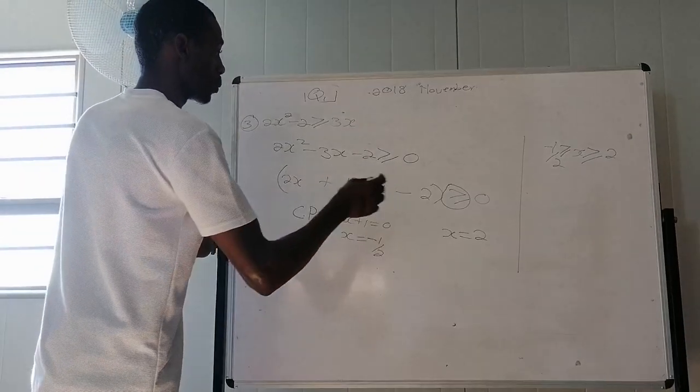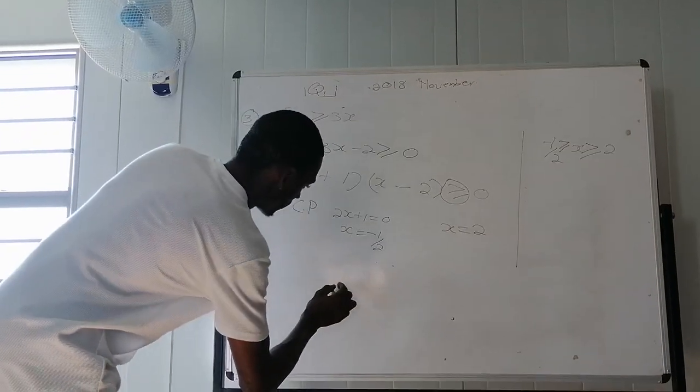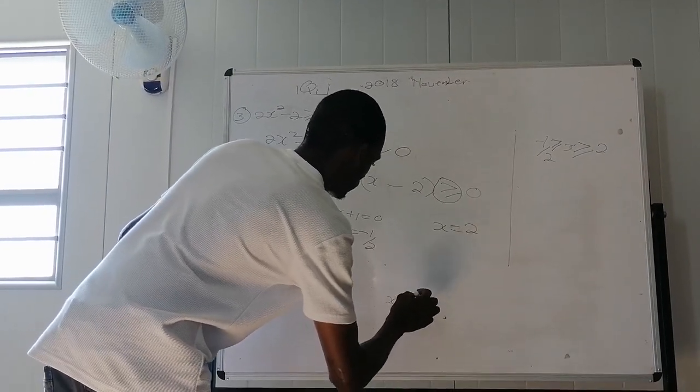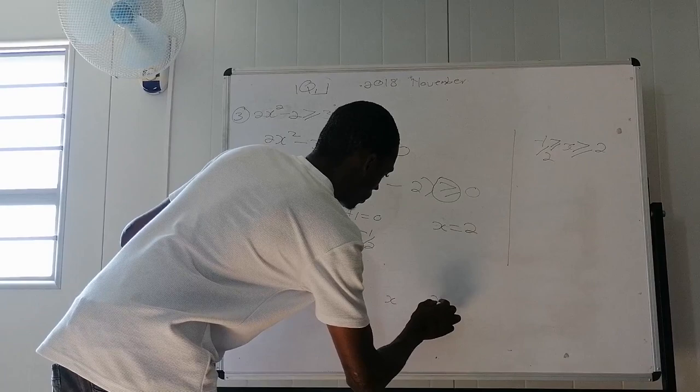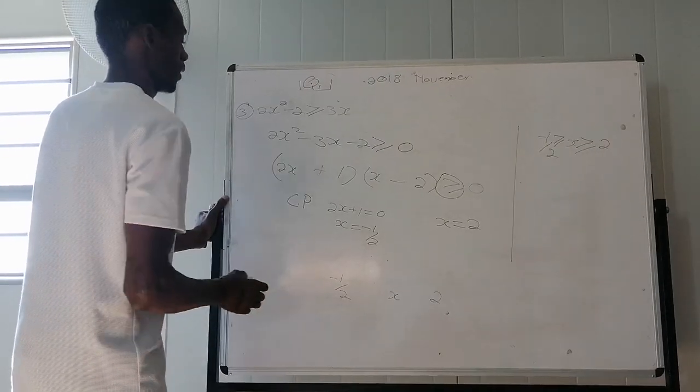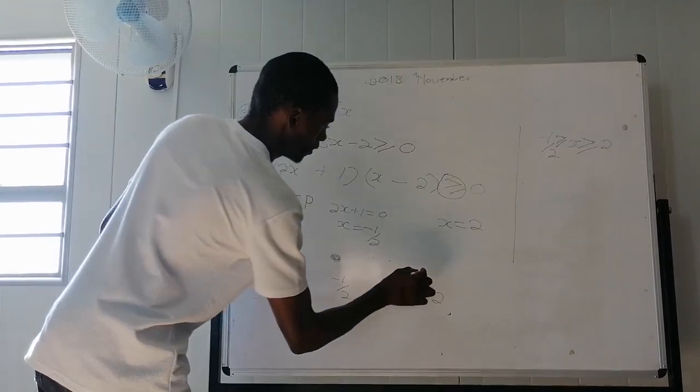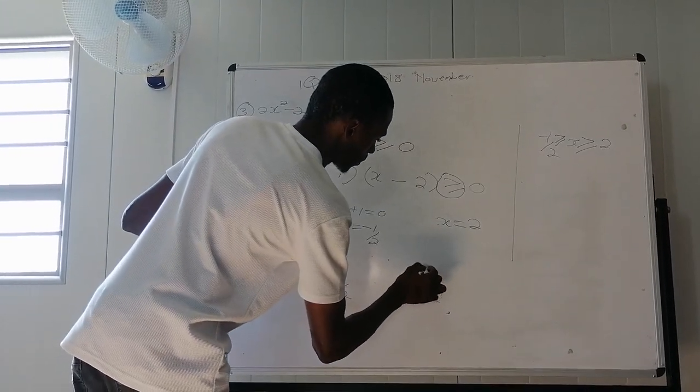Now you have to plot the graph. You have your negative 1 over 2, you have your x, you have your 2. You see? You shade. You shade here.